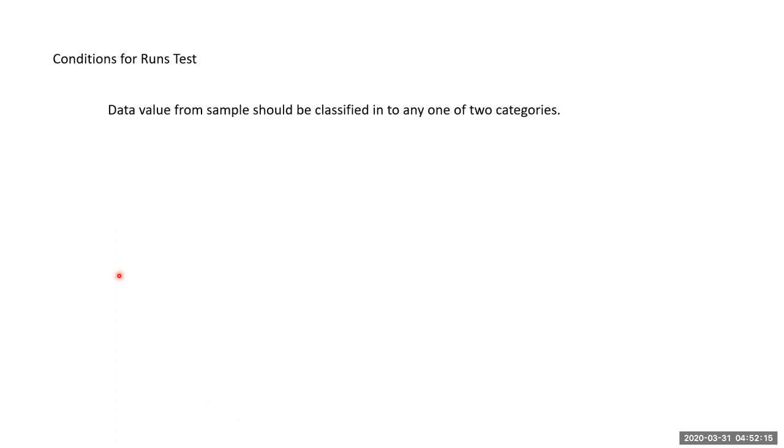Conditions for run test: The data values from sample should be classified into any one of two categories, like odd or even, heads or tails. Count the total number of runs relative to the number of data values that fall into each category. Number of data that fall into each category I have made together, called as a block, and then counted the number of blocks, which is the number of runs.